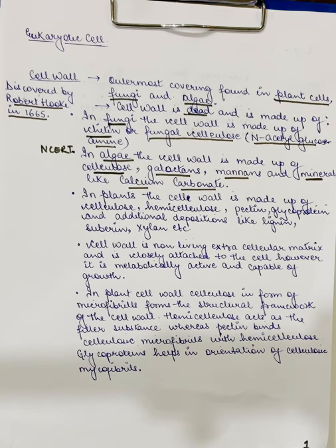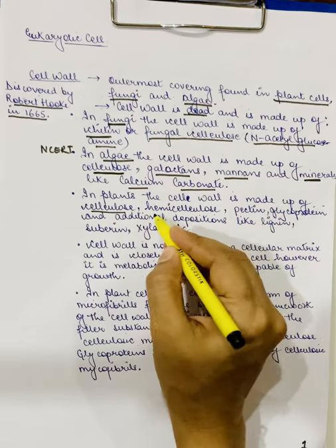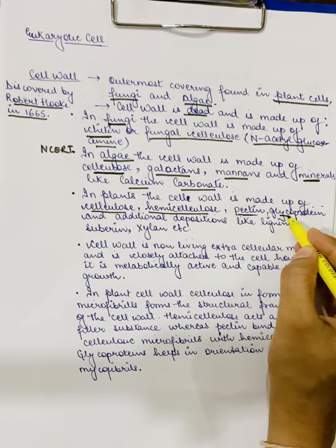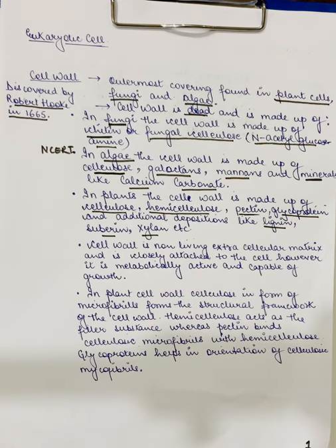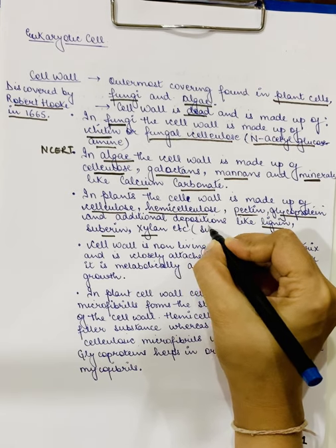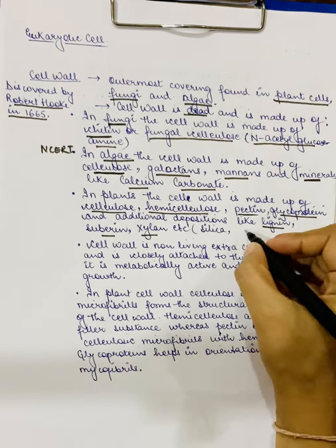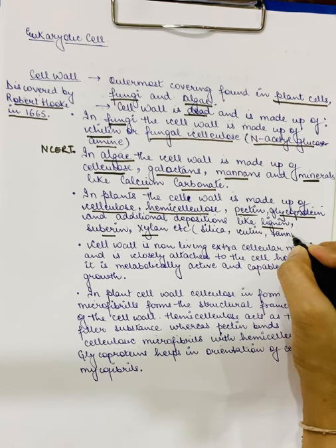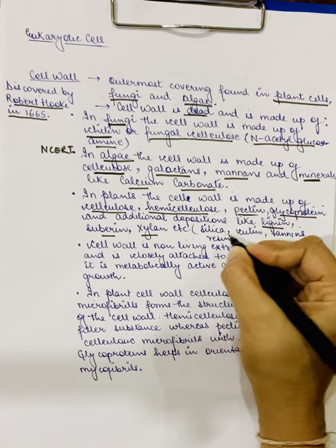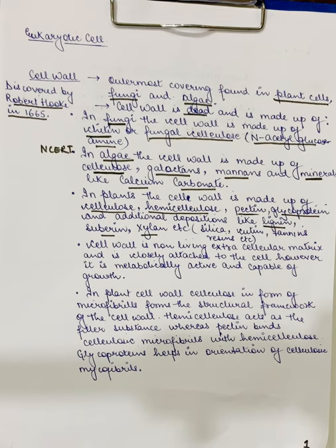In plants, the cell wall is made up of cellulose, hemicellulose, pectin, glycoprotein, and there might be additional depositions like lignin, suberine, xylans, and even silica. Silica is present in the cell wall of grasses. Cutene is found in the epidermal cells of leaf. There may also be tannins, resins, etc. So, in plants the cell wall is made up of cellulose, hemicellulose, pectin, glycoprotein, and additional depositions like lignin, suberine, xylans, etcetera.